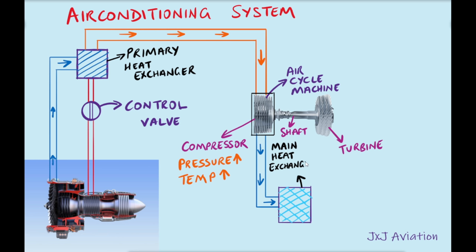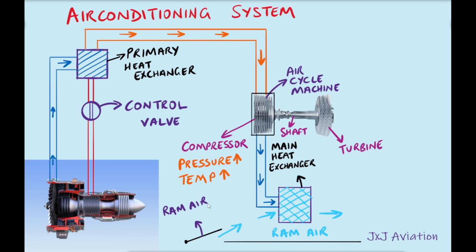So the air is passed through another heat exchanger called the main heat exchanger. This is also an air-to-air heat exchanger which uses the cold outside air called RAM air. This air is taken into the aircraft by a RAM air inlet, passes over the main heat exchanger, and gets discharged overboard.